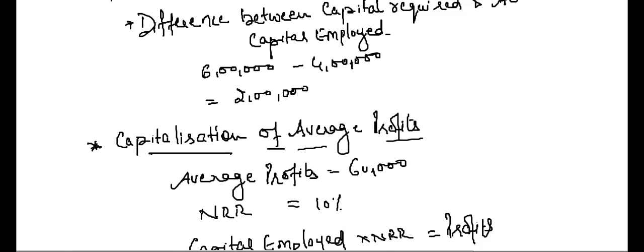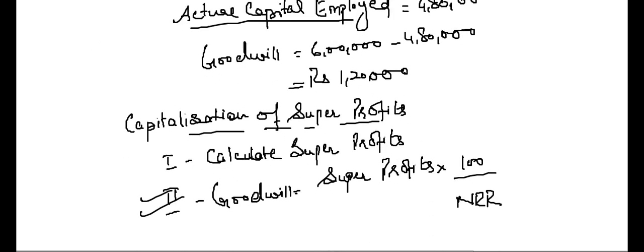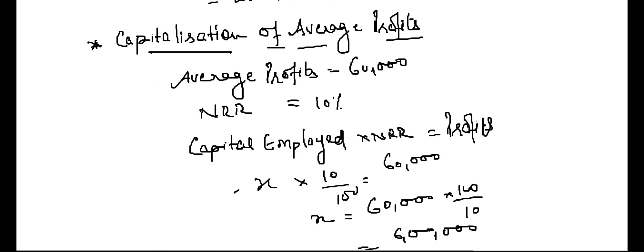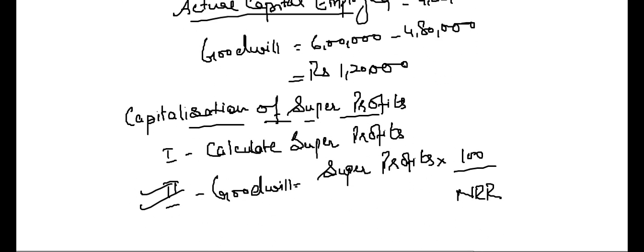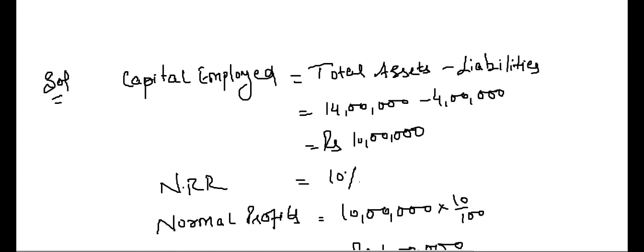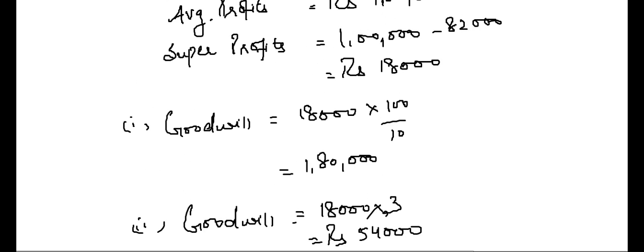This is a very simple method — the capitalization method. Under capitalization of average profits: calculate capital required and actual capital employed; the difference is goodwill. Under capitalization of super profits: calculate super profits and capitalize them to get goodwill.